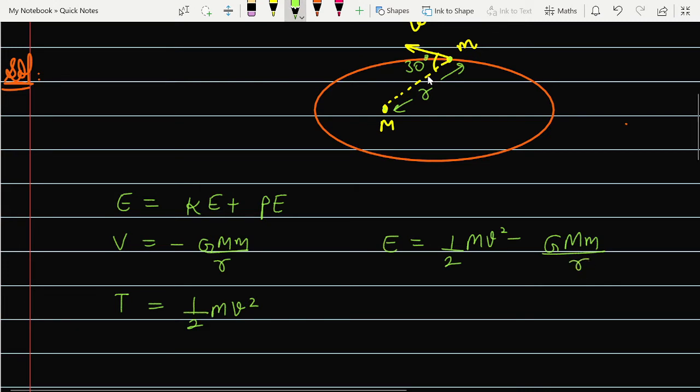Now in this instant the radial vector is making an angle of 30 degrees. This is your radial vector, this is your velocity vector and it has 30 degree angle. So we can calculate the angular momentum here. The angular momentum is mvr sin theta, and what angle is it? mvr by 2, because sin 30 is 1 by 2.